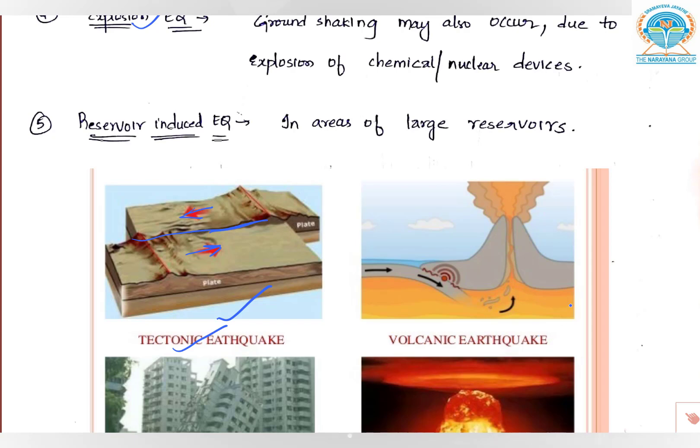The second one is volcanic earthquake. This is also part of tectonic because it's happening almost on the surface. But this is happening because there is an explosion from inside coming from the vent of the volcano. Because of this explosion, minor tremors are produced, giving us a feel of earthquake.